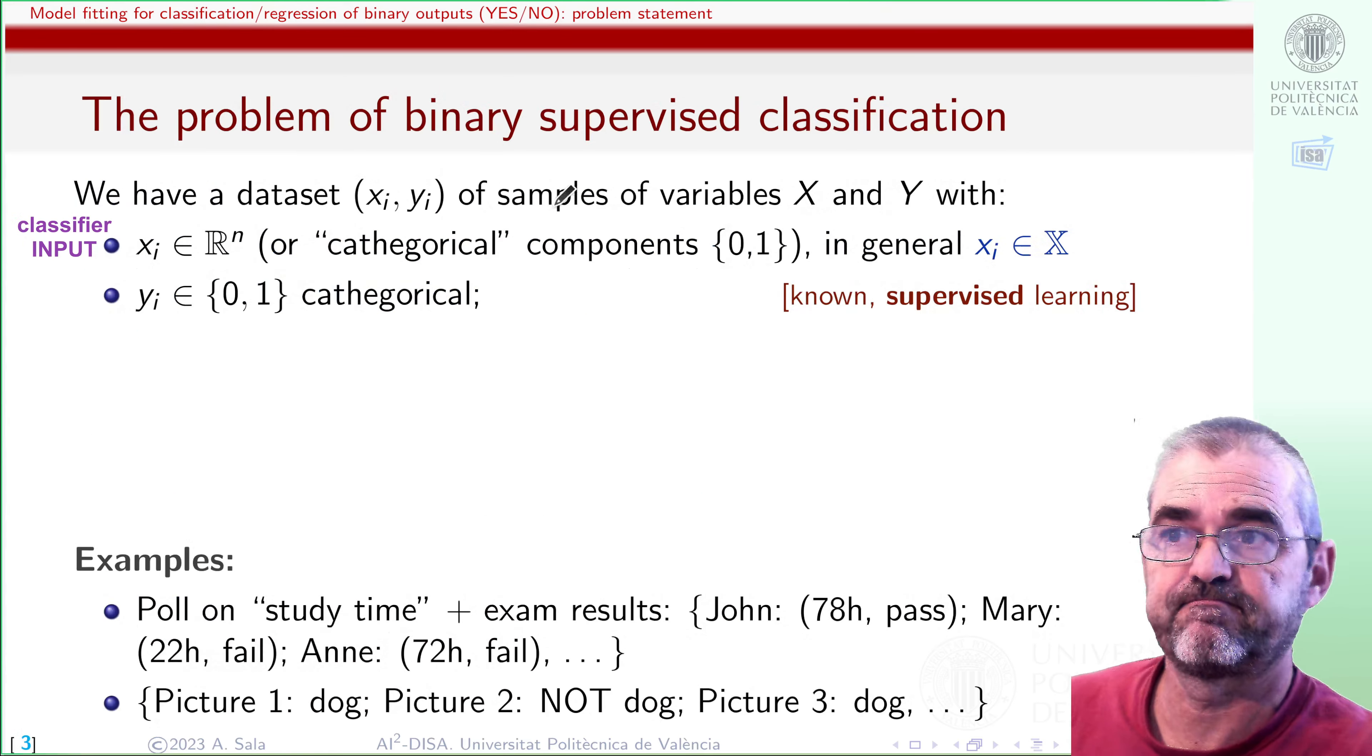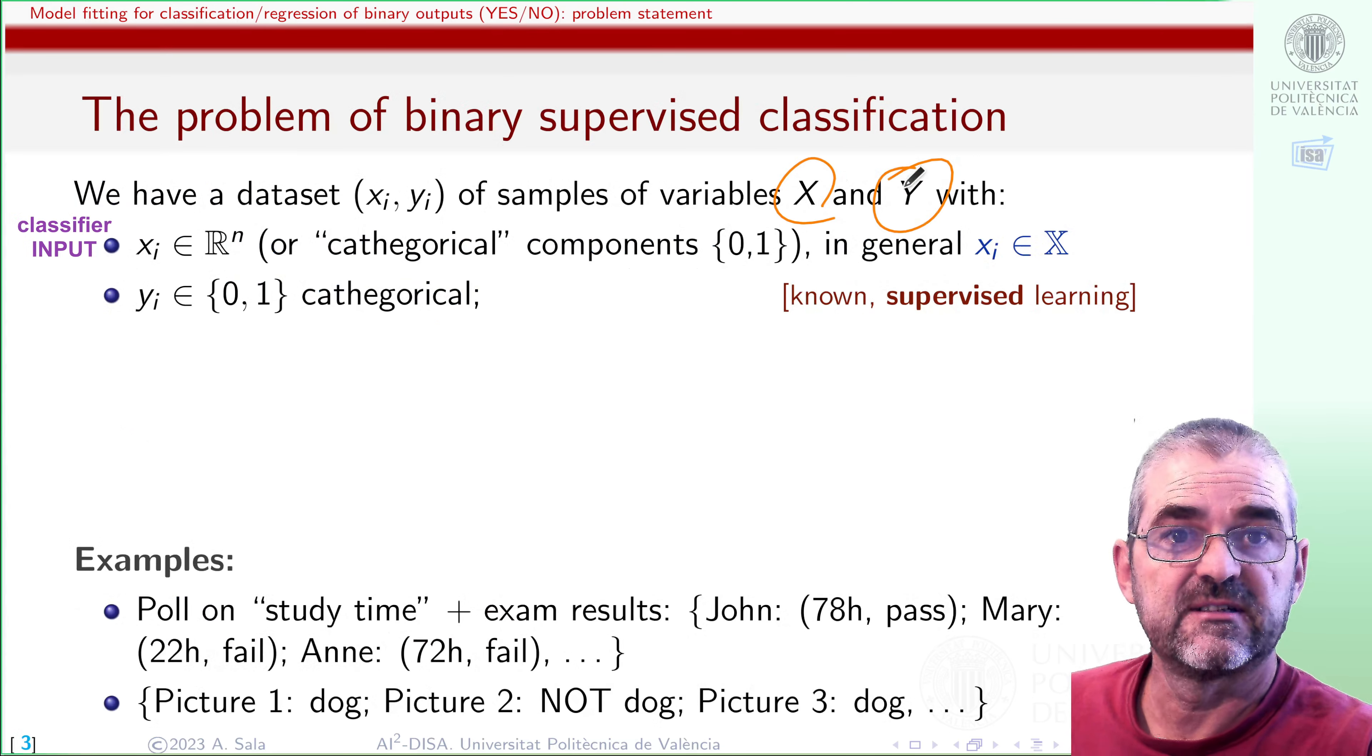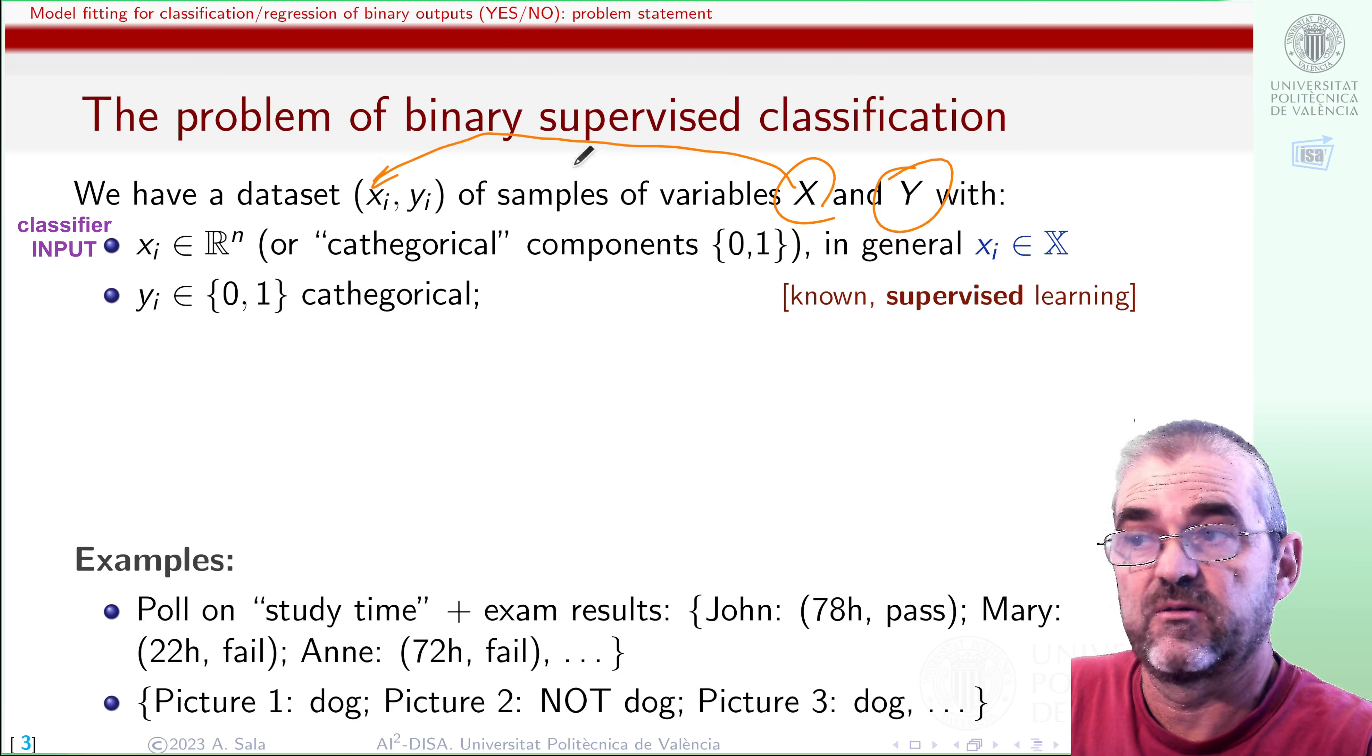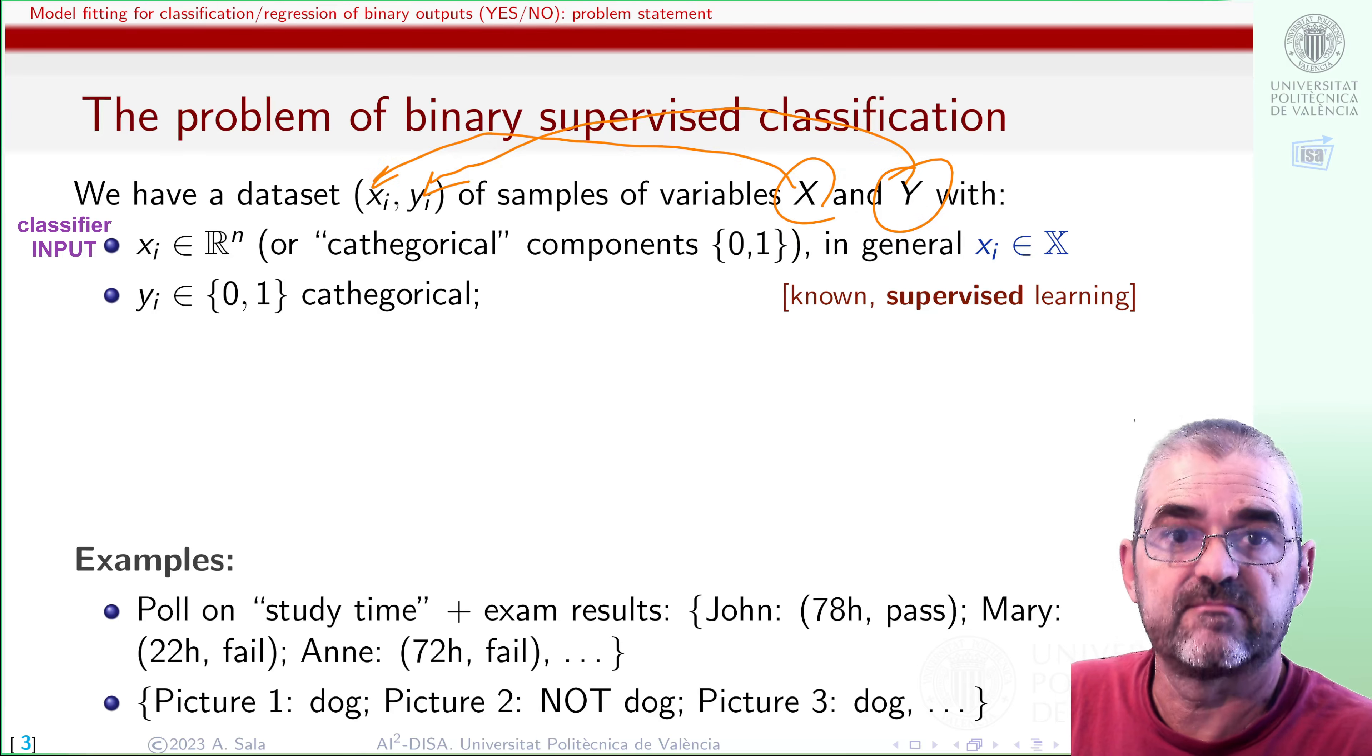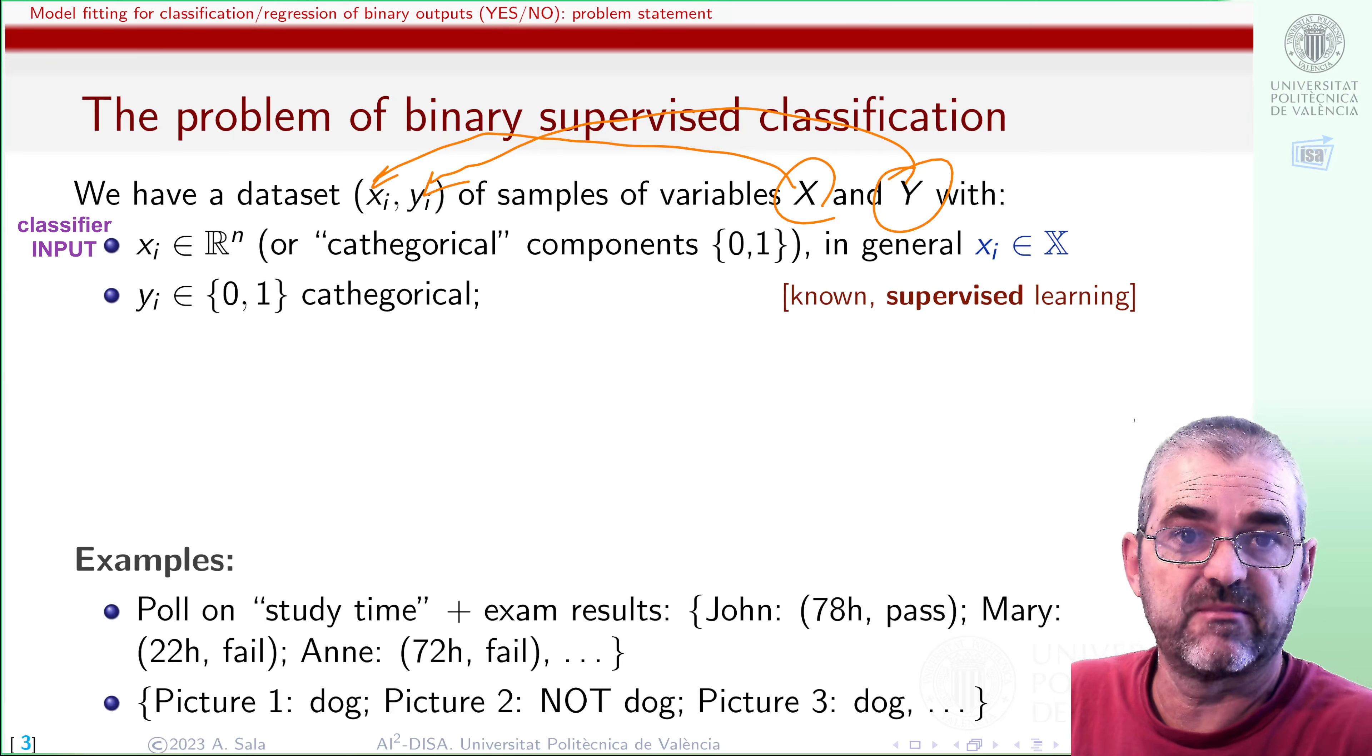This kind of problems I will have samples of two variables, capital X and Y, grouped in pairs. Each sample will be denoted in lower case. Data on the variable X will be information, input to my classification system, and Y will be the desired output of my system. Well, maybe not exactly, but at least will be the target sample, which will be yes, no.